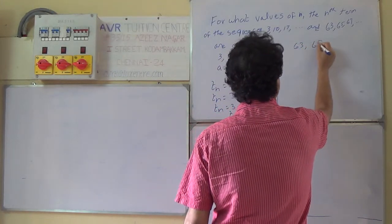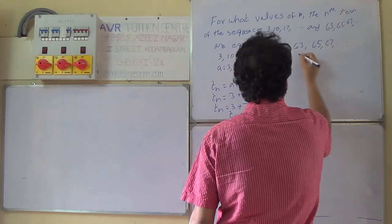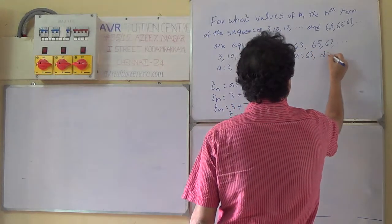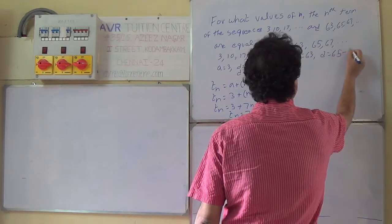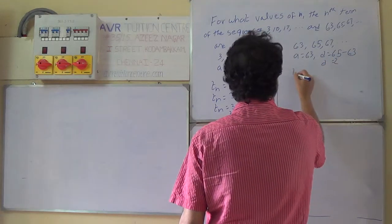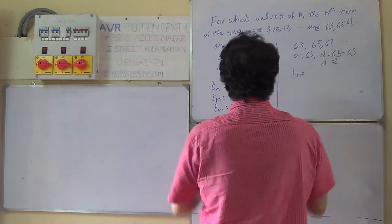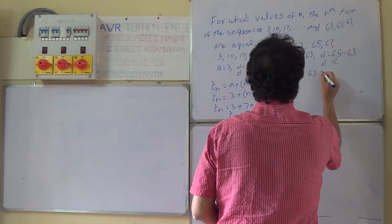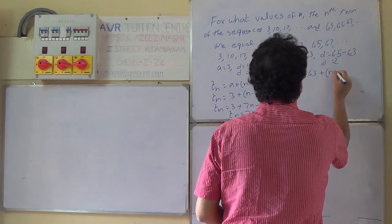Now take the second sequence: 63, 65, 67 and so on. Here a equals 63, d equals 65 minus 63, so d equals 2. tn equals a, the first term here is 63, plus n minus 1 into d.